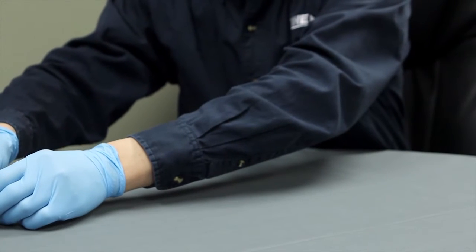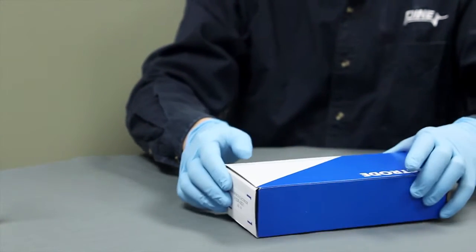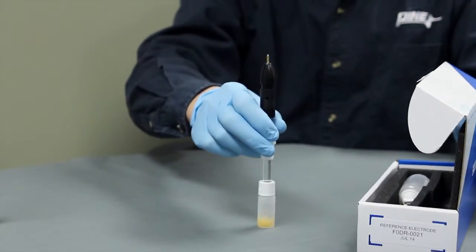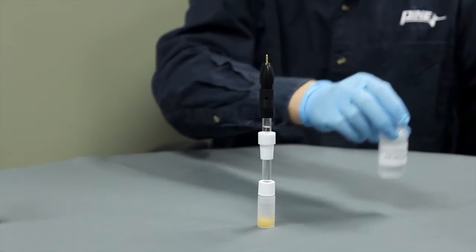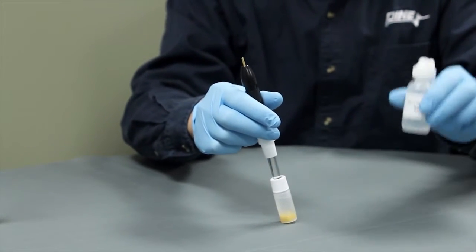Let's talk about how to use this one in aqueous solution. First, we'll go over what comes in the box. You get the electrode, the electrode storage bottle, and a bottle that contains filling solution.